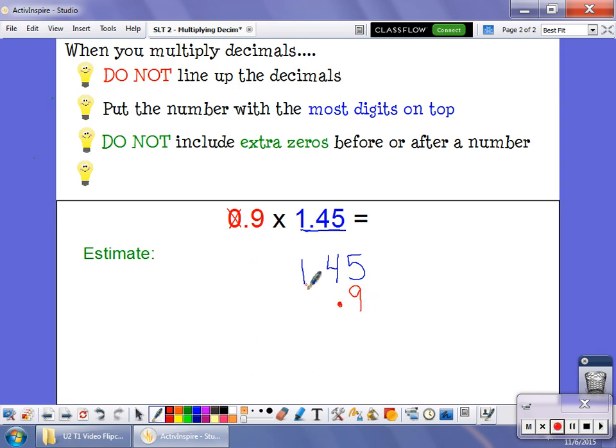So what I have is 1.45 times 0.9. I don't line up my decimal points. See how they're not lined up. My number with the more digits is on top, and I'm not including any extra zeros.